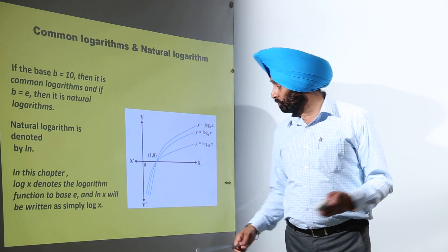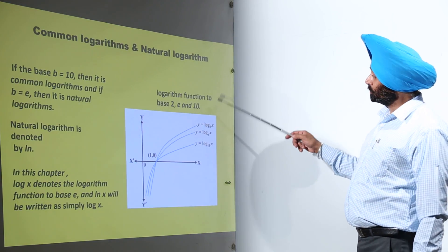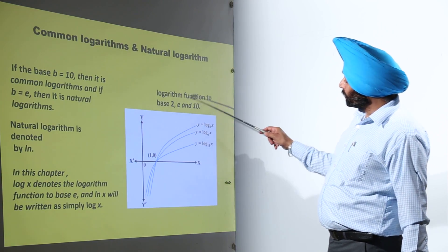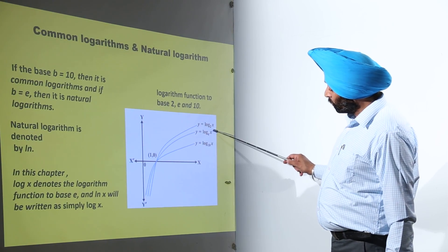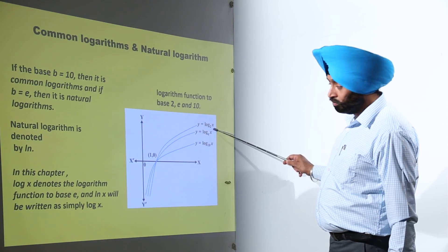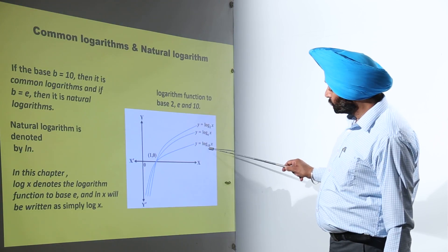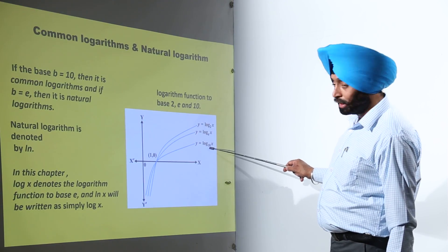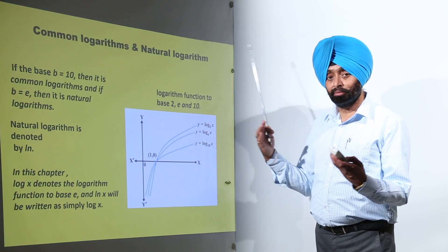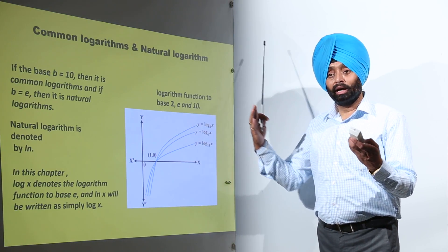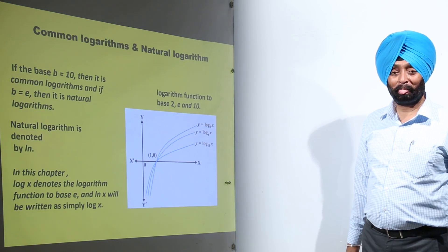We are having three different graphs — you can check: the logarithm function to base 2, the logarithm to base e, and the logarithm to base 10. All three graphs are moving away from the y-axis.